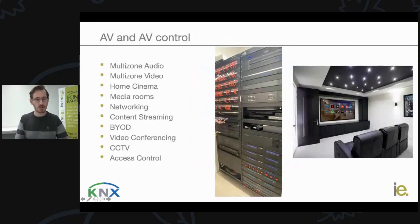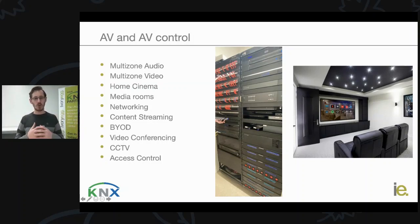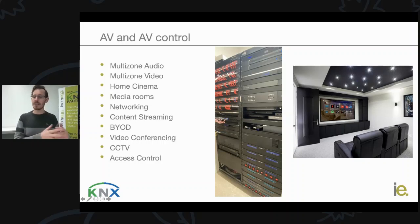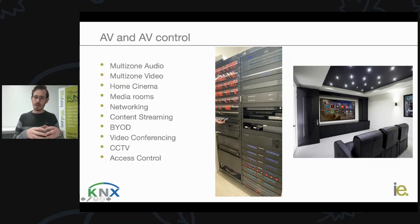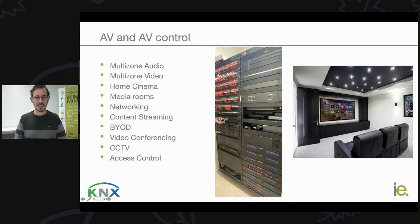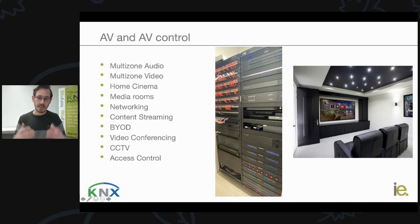AV is quite different. AV — audio visual — is the stuff that sits on the surface of the home. It's the things more linked to entertainment and how you use a home: having audio in different rooms, music throughout your home, TVs in different rooms, maybe streaming from central sources. It's the things we use to relax and enjoy our homes. There are also dedicated media rooms or home cinemas where you're really focusing on the experience — being able to sit down with the family to watch a movie, which takes a lot to create.